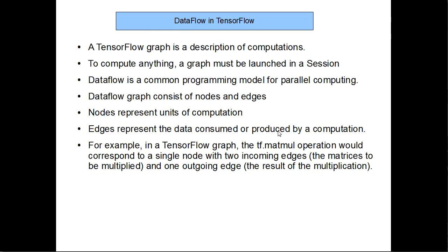Data flow is a programming model for parallel computing. Data flow consists of two things: nodes and edges. For example, if you want to add two numbers, those two numbers are the data — called edges — and the addition operation is the node. Data flows through this complete graph when you have many operations, which is why it is called data flow, and since we use tensors, it is called TensorFlow.